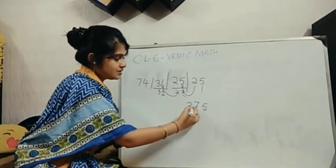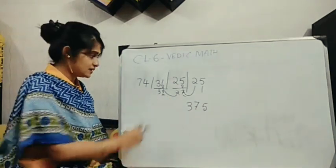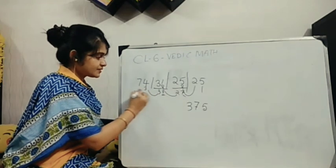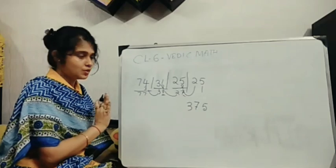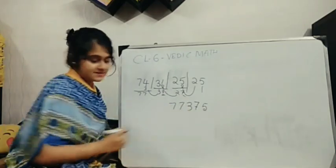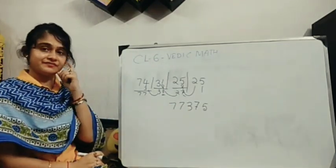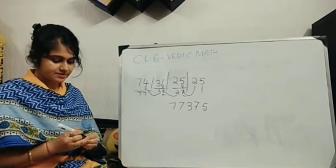Now, 3 you take it here. Take this 3 here. Gives me this. Any number left here? No. Just add up. 7, 7, 3, 7, 5. Clear? This is your answer.